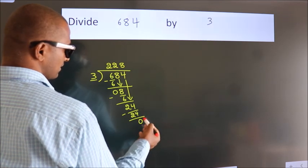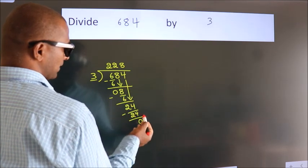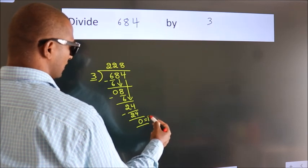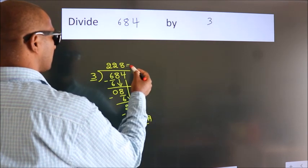After this, no more numbers to bring it down. So, we stop here. This is our remainder. This is our quotient.